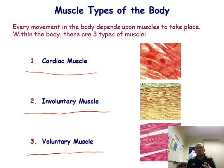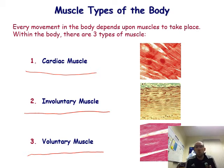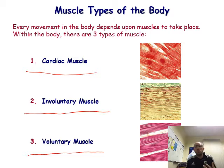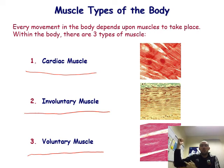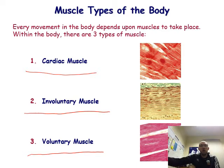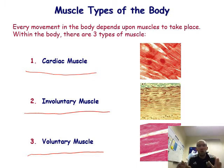Involuntary muscles are muscles working in your body without you realizing. Your digestive system is a muscle — it contracts and relaxes to digest your food and move it through your body, and you have no control of this at all. Voluntary muscles are muscles you consciously move — you know you're bending your arm or moving your head. When I lift my arm, I'm telling my bicep to lift it and my tricep to bring it down.